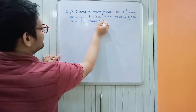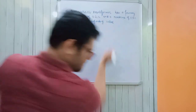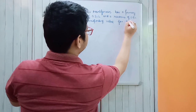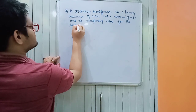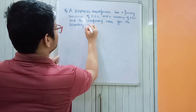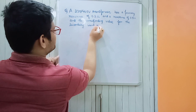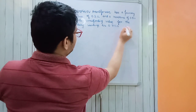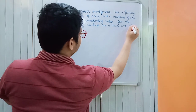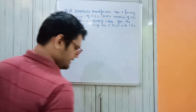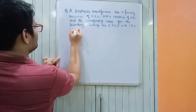The corresponding values for the secondary winding are: secondary resistance R2 = 0.75 ohm and secondary reactance X2 = 1.8 ohm.